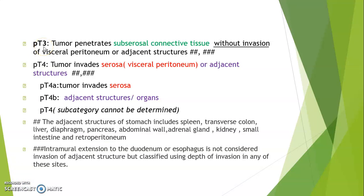PT3 is when tumor penetrates the subserosa connective tissue without invasion of visceral peritoneum or adjacent structures. T4 is when tumor invades the serosa (visceral peritoneum) or adjacent structures. PT4 is further divided: PT4A when tumor invades the serosa, and PT4B when adjacent organs or structures are involved. PT4 is assigned when the subcategory cannot be determined.